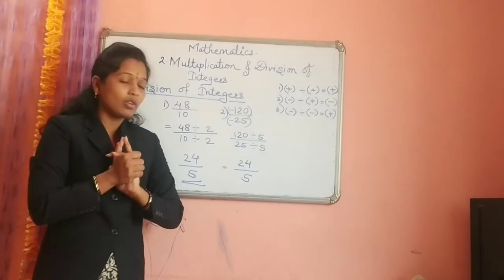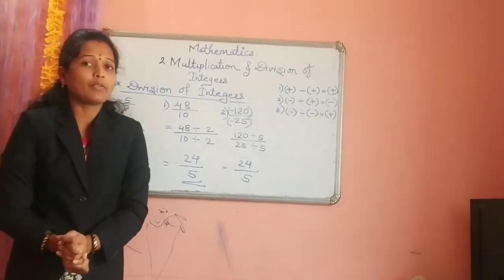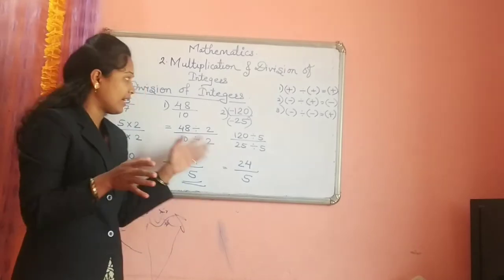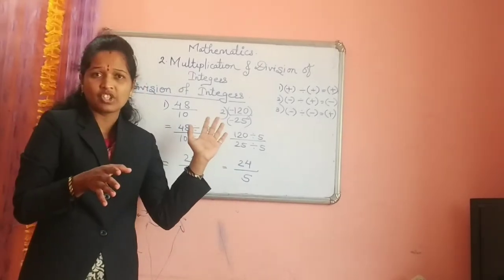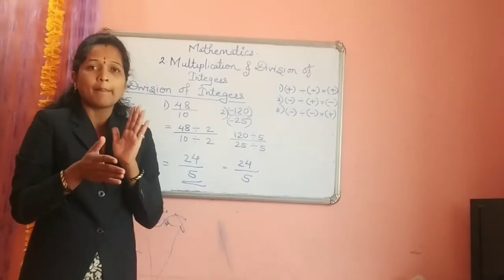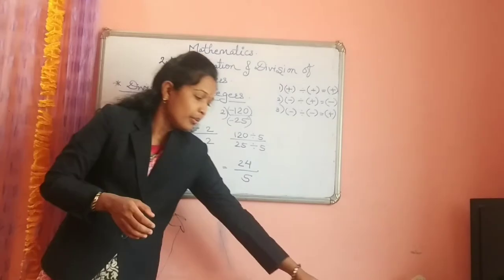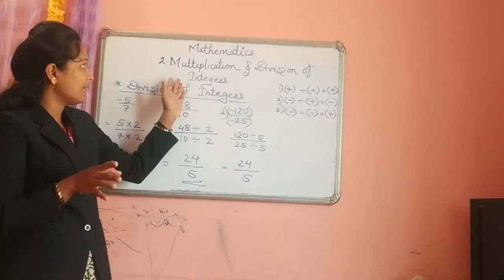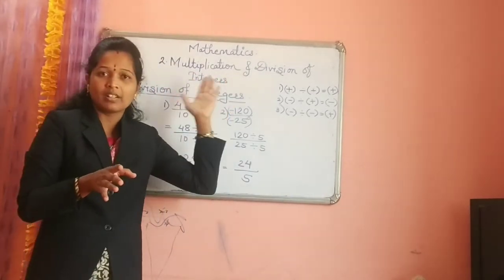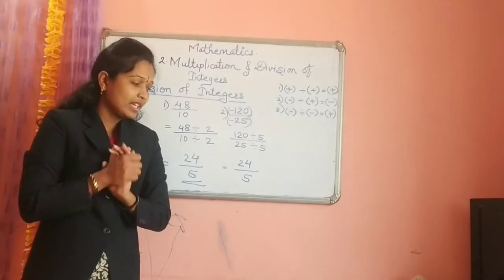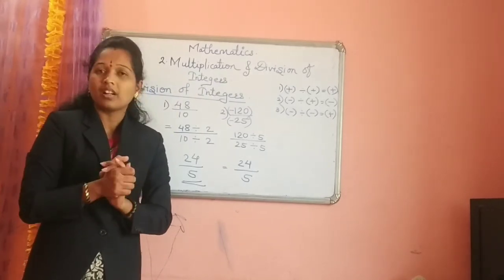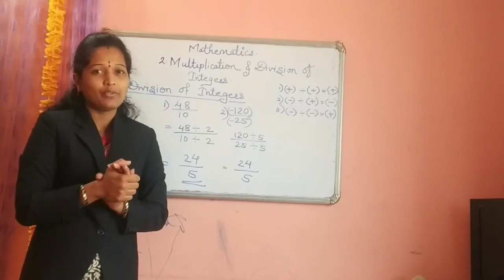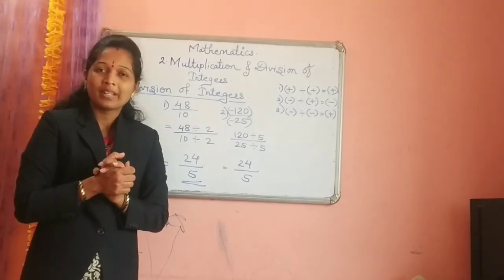I hope you can solve practice set number 9. Question 4 is also easy — look at the fish tag and find the multiplication and division examples. In this way, we have completed chapter 2 on multiplication and division of integers. In our next video, we will cover chapter 3, which is HCF and LCM. Solve the exercise and send me the photos. Bye, thank you.